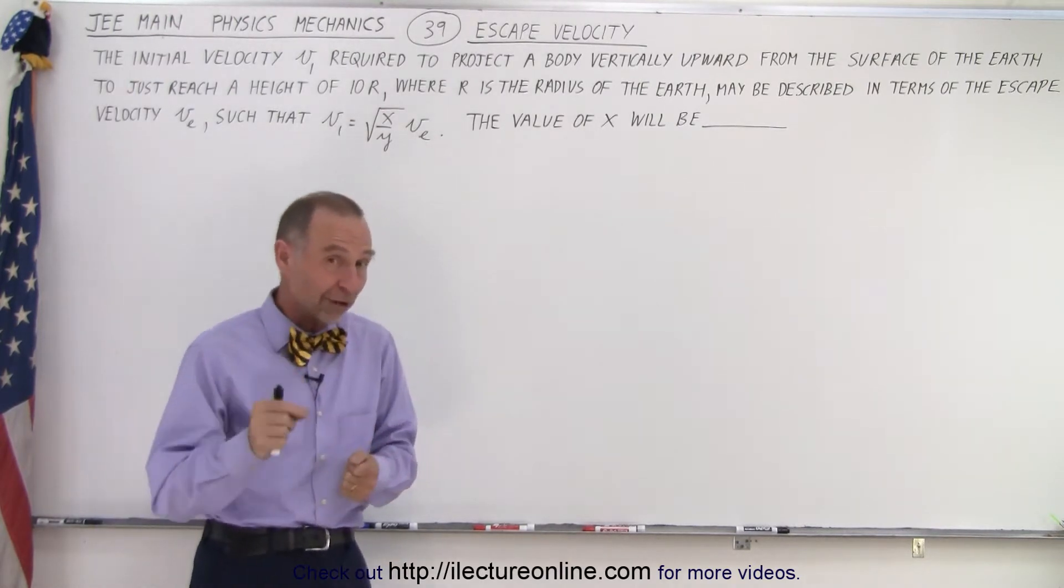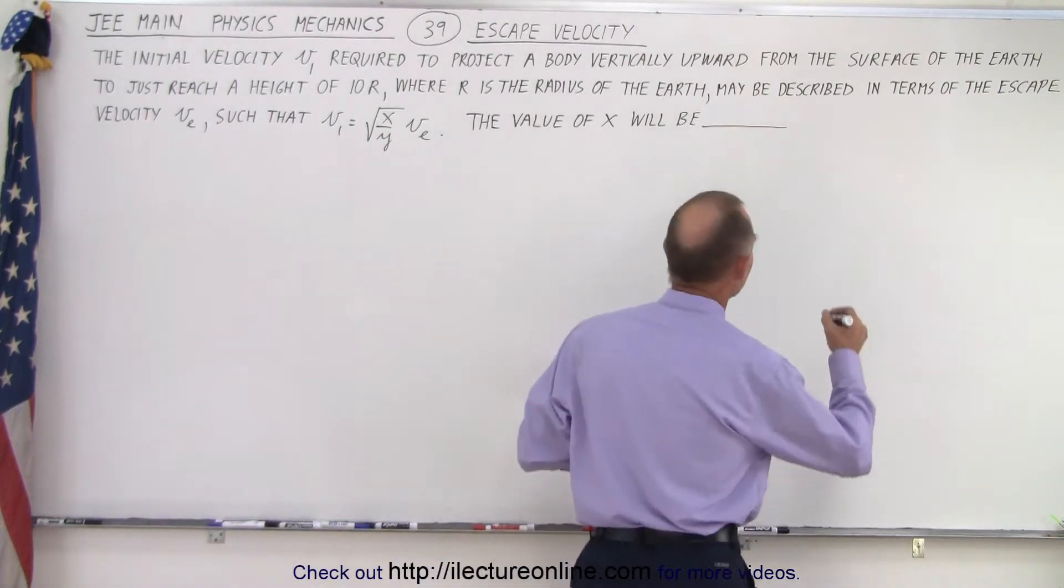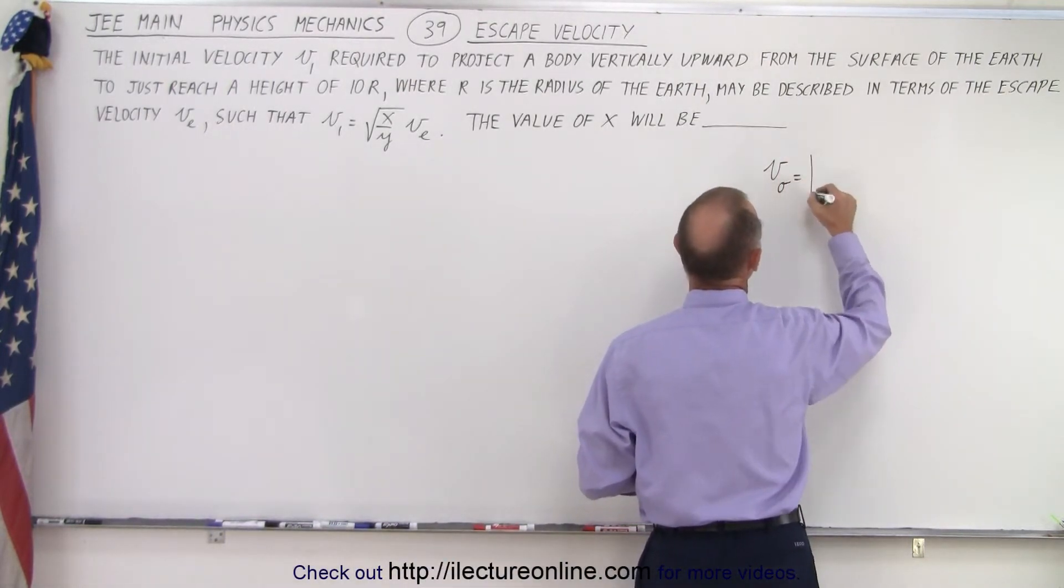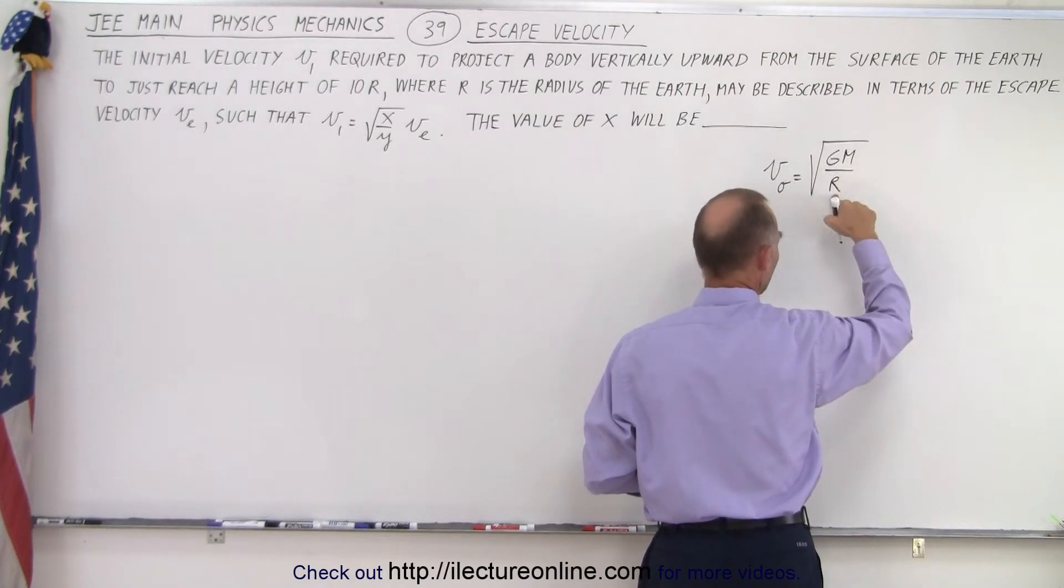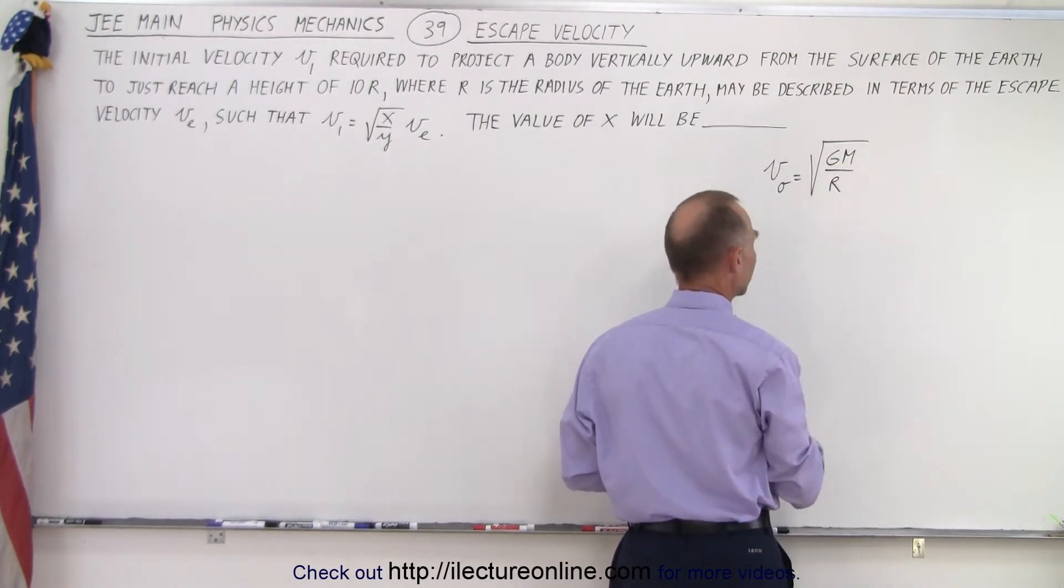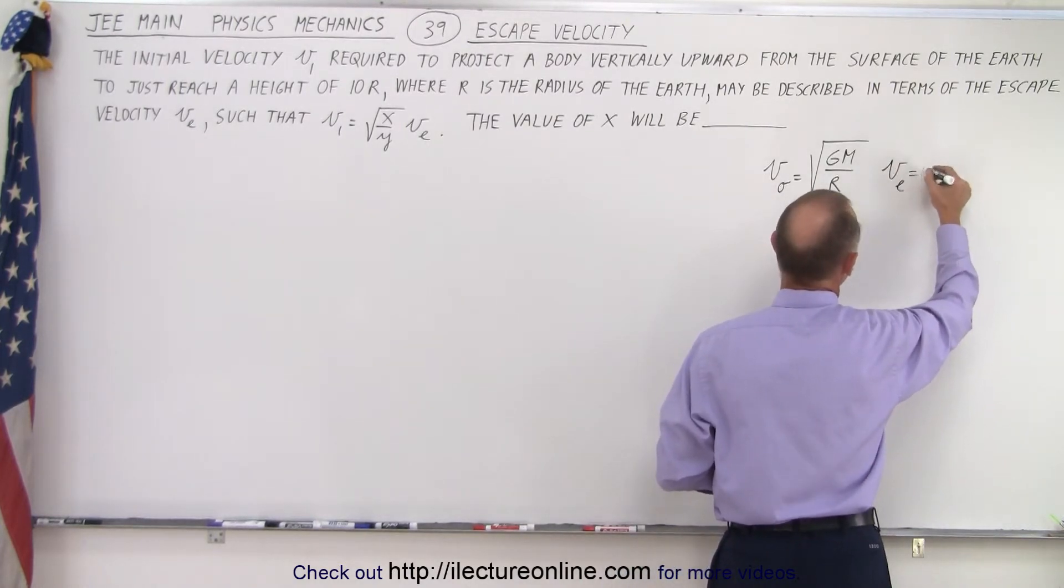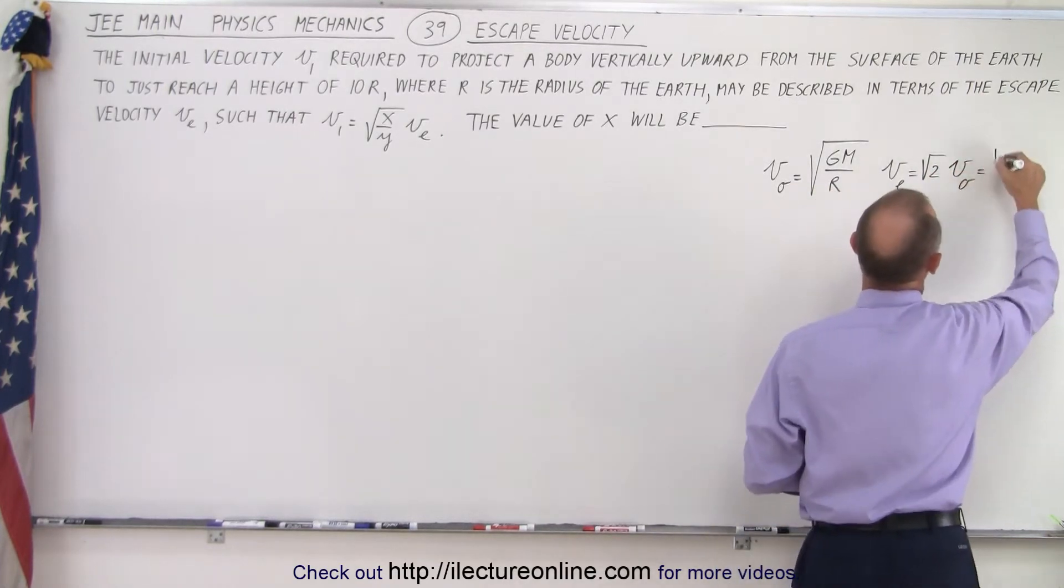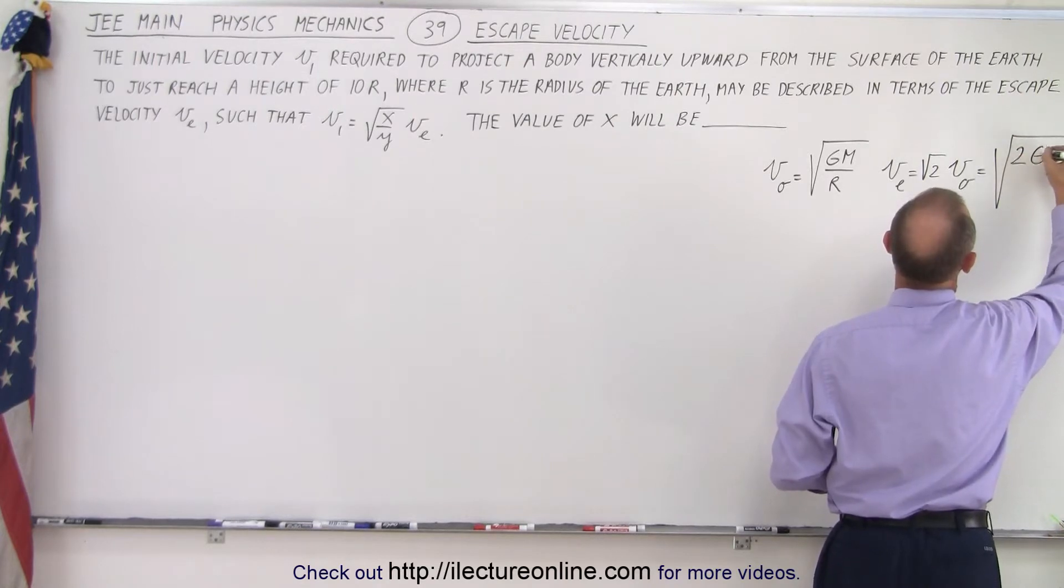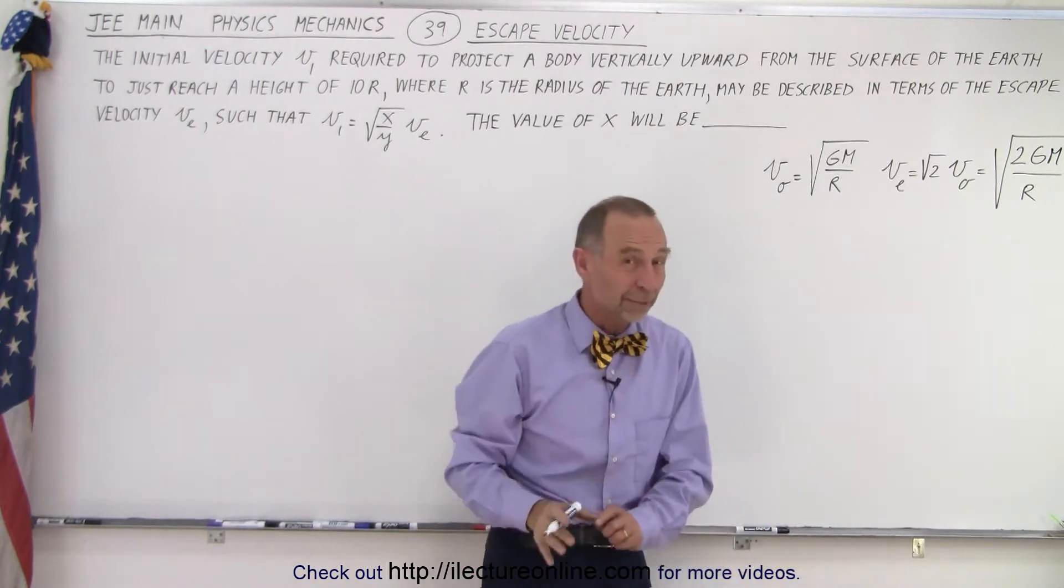First of all, in order to solve this problem we need to know the equation for the escape velocity. We should know that the equation for the orbital velocity is equal to the square root of GM over r, where M is the mass of the earth, r is the radius of the earth, and G is the universal gravity constant. We know that the escape velocity is equal to the square root of 2 times the orbital velocity, so this is equal to the square root of 2GM over r.